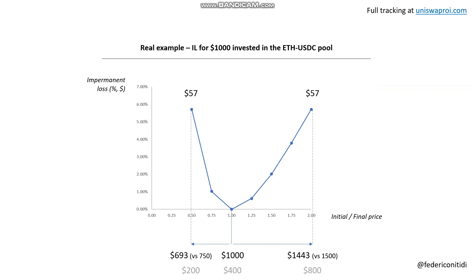Let's consider a real case example. Let's assume you invest $1,000 in the Ethereum/USDC pool at the current price of $400, ignoring fees. If the price of Ethereum goes down to $200, you would have $693. Now if you kept your investment outside of Uniswap at 50/50 USDC and Ethereum, you would have $750. So you have an impermanent loss of $57. Or if the price moves the other way and Ethereum goes to $800, you would have $1,443 compared to $1,500 if you kept the assets outside of Uniswap — again an impermanent loss of $57. Note that if the price goes down, this $57 is a real loss; if the price goes up, this $57 is a missed gain.